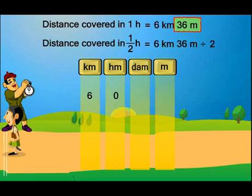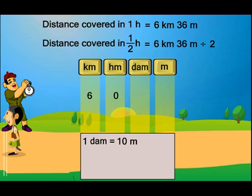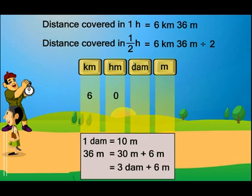Now it is 36 meters. We know that 1 decameter is 10 meters. So 36 meters is 30 meters plus 6 meters, or simply it's 3 decameters plus 6 meters. So we have 3 decameters. So we write 3 here under the decameter column. And we have 6 meters. So we write 6 here in the meter column.